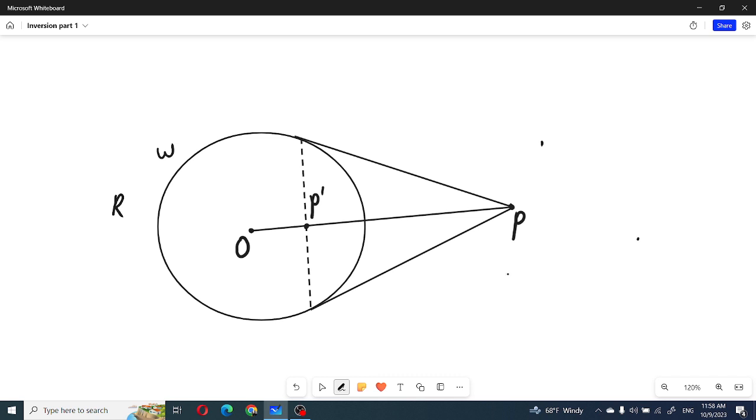Center of the cycle and its radius, and the property is that OP prime times OP must be equal R square. And how can we find P prime? Very easily. If we draw tangents from P to this circle omega, then A and B.